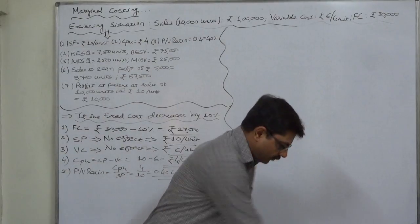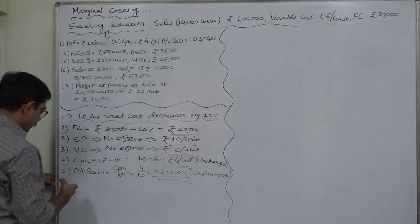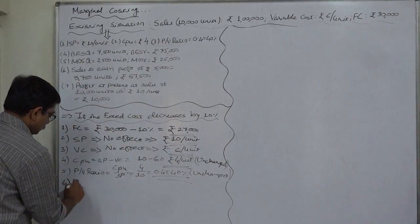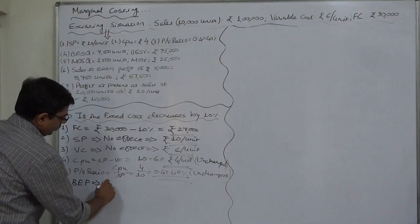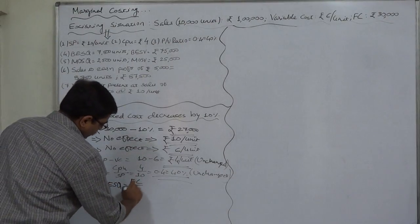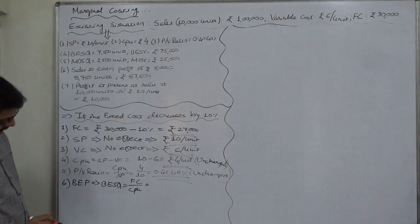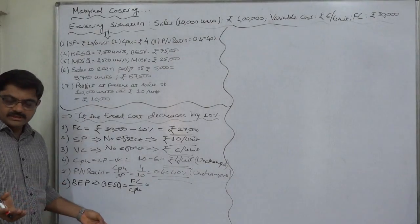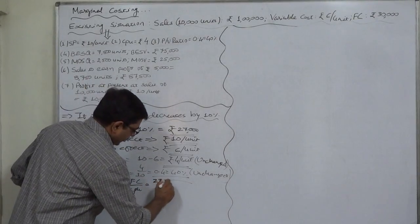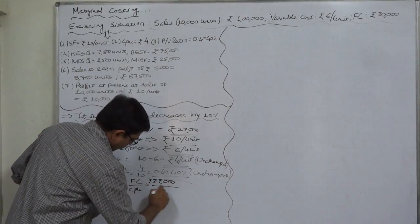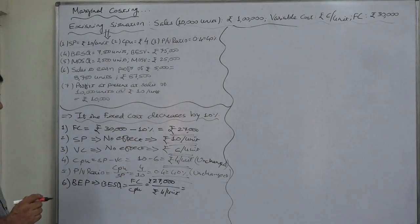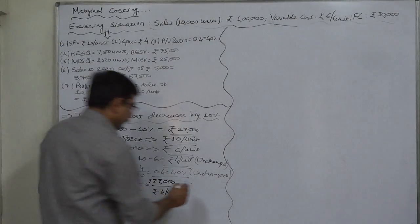Now let us check what is going to happen with the break-even point or break-even sales. Break-even quantity equals fixed cost divided by contribution per unit. Since fixed cost has a direct role in break-even sales quantity, it must change. Revised fixed cost of ₹27,000 divided by unchanged contribution of ₹4 per unit gives a break-even sales quantity of 6,750 units.